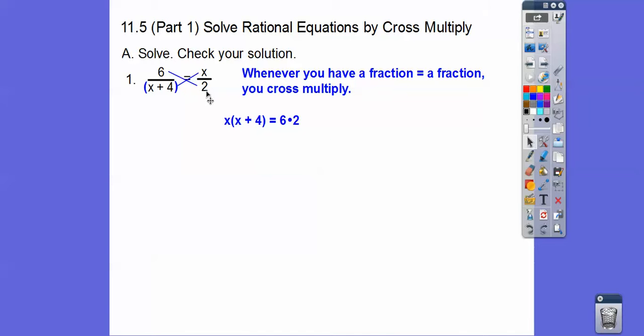Now I could have done 6 times 2 first and put it on the left. But since all the x stuff is this way, I did this side first. So it's on the left right here. Now we'll distribute this x through. So x times x and x times 4. And then 6 times 2 equals 12.